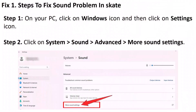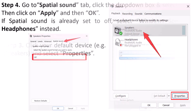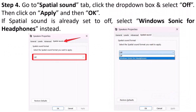Step 1 to fix sound problem in Skate on your PC: click on Windows, then click on Settings. Click on System, Sound, Advanced, then More Sound Settings. Click your default device — for example, Speakers — and then click on Properties.